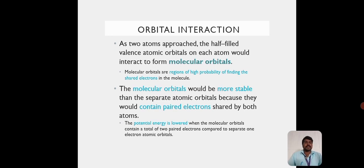Orbital Interaction: As two atoms approach, the half-filled valence atomic orbitals on each atom would interact to form molecular orbitals. Molecular orbitals have regions of high probability of finding the shared electrons in the molecule. The molecular orbitals would be more stable than the separate atomic orbitals because they would contain paired electrons shared by both atoms.